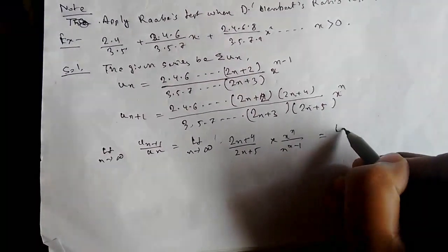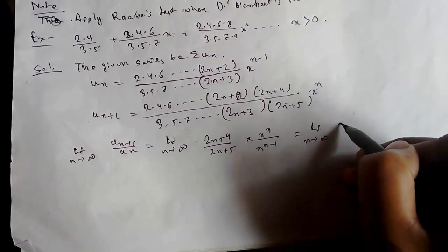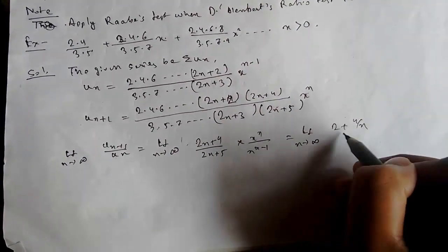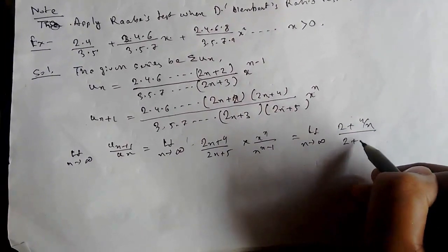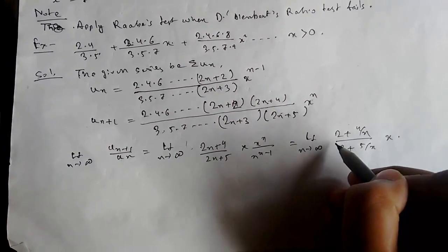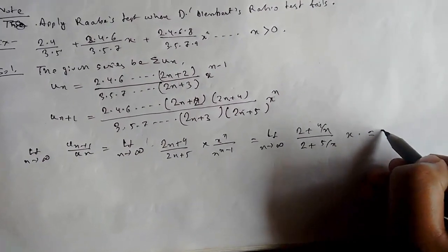Limit n tending to infinity, dividing numerator and denominator by n: (2+4/n)/(2+5/n) times x. So now applying limiting values, we get x.